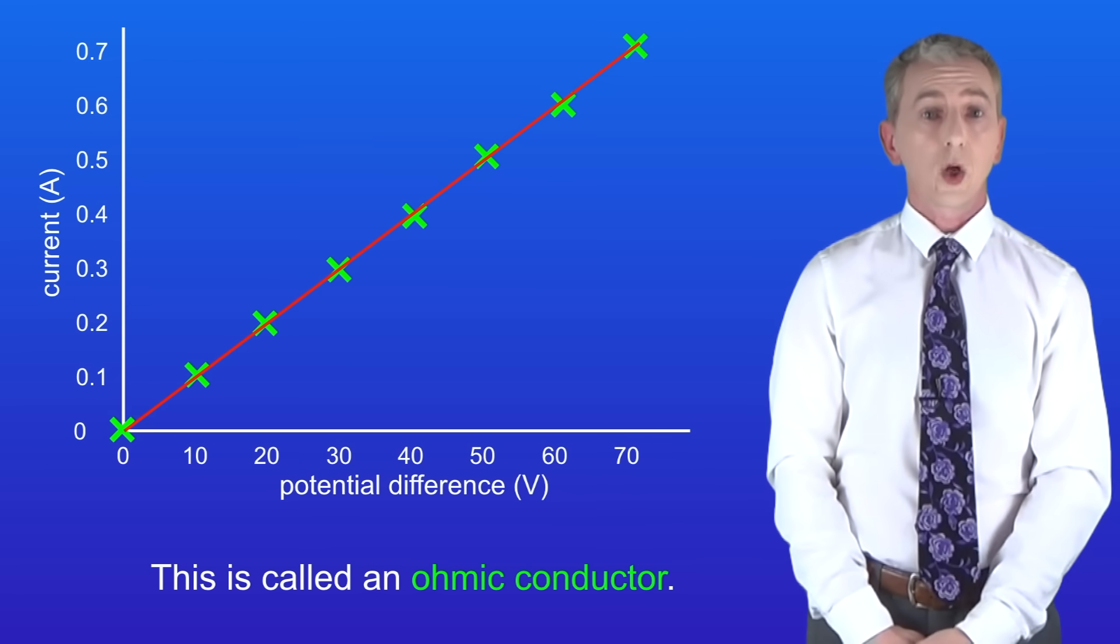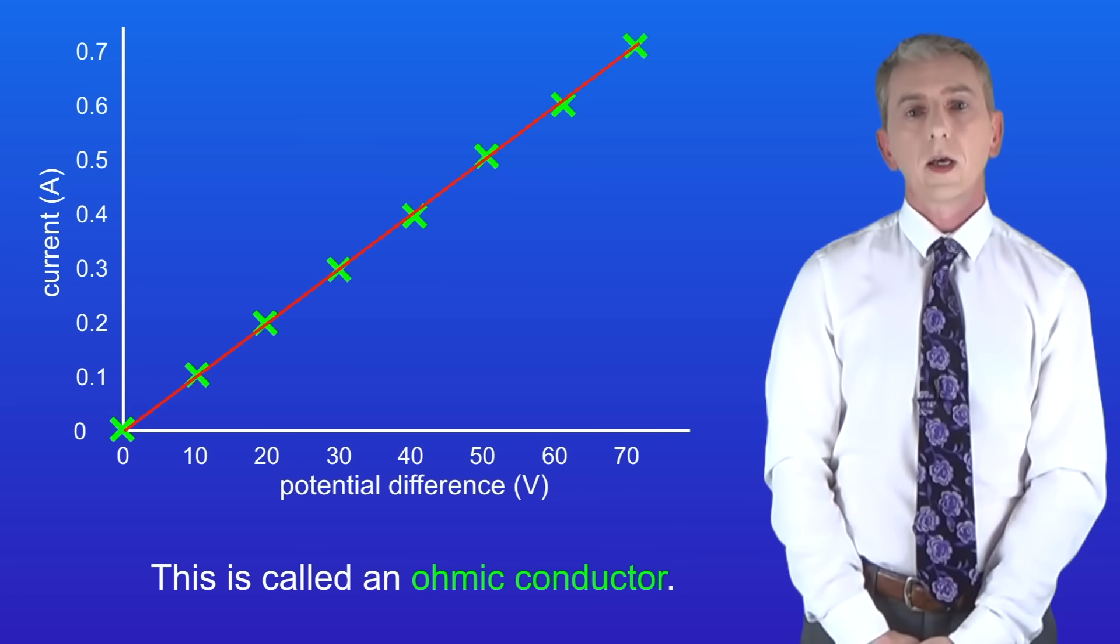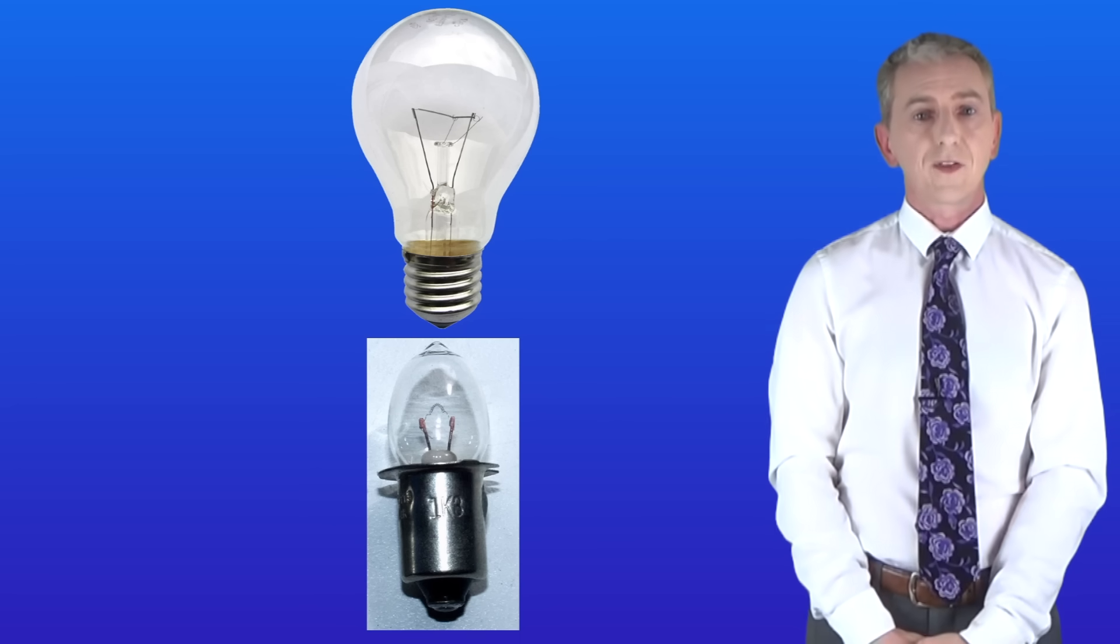So let's start by taking a closer look at filament lamps. I'm showing you here a filament lamp that we sometimes find in homes. These are being phased out as they're not energy efficient. A torch bulb such as this one is also a filament lamp.